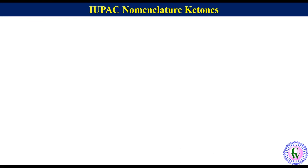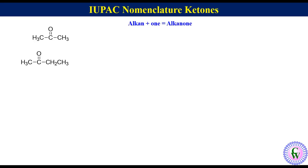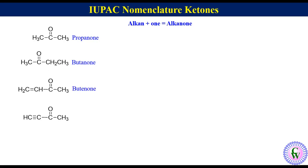Now let's go through examples. We will start with very simple ketones containing 3 and 4 carbon atoms. These are simply named as alkane + 'one' = alkanone. So the IUPAC name of the 3-carbon ketone is propanone and that of the 4-carbon is butanone. The 4-carbon ketone may also contain alkenyl or alkynyl groups. One thing to note is that in these examples it is not necessary to mention the position of the keto group because the position is non-ambiguous.